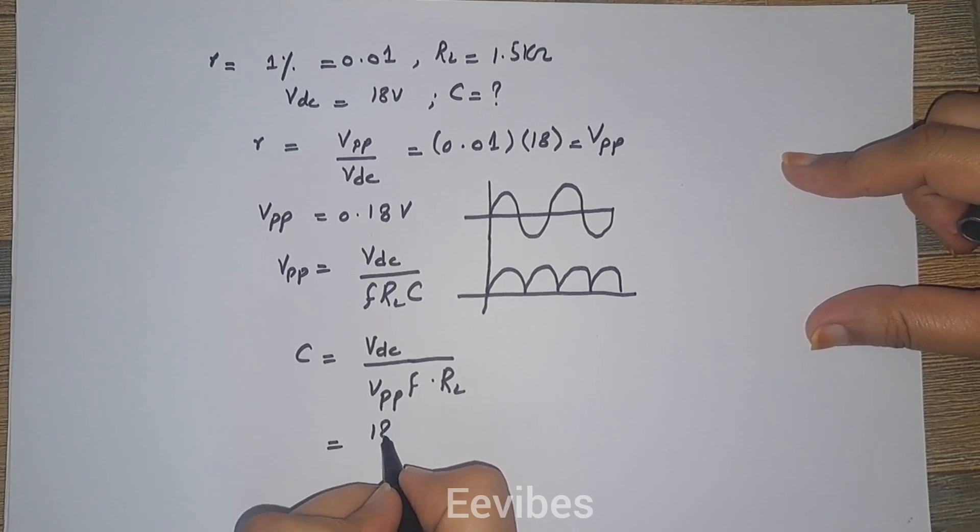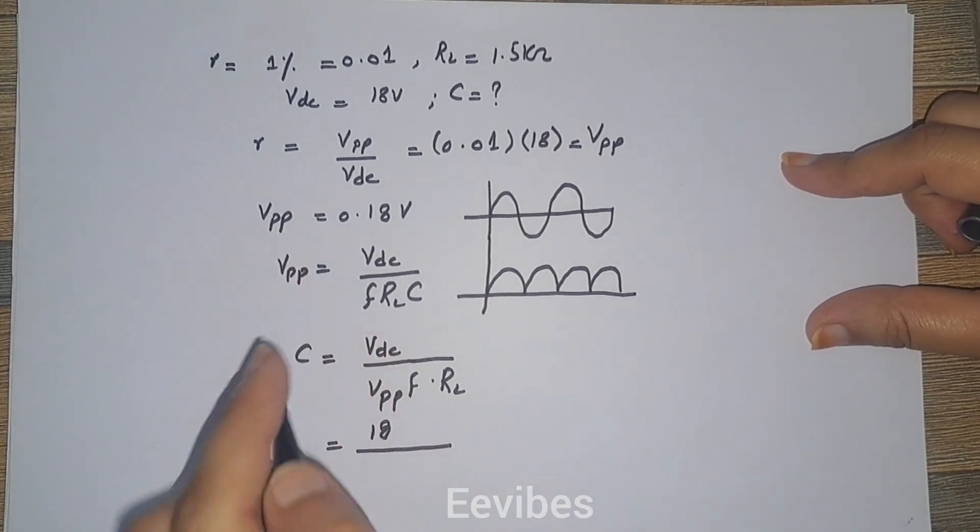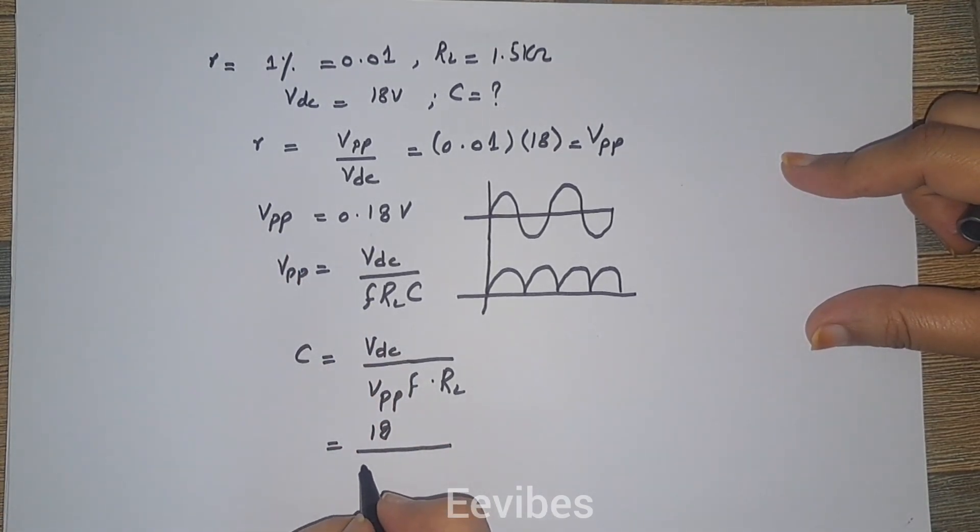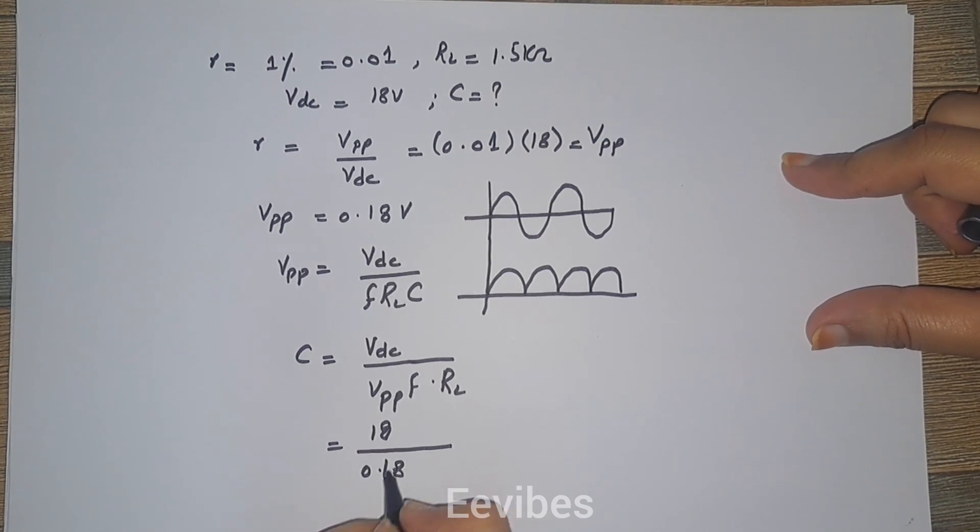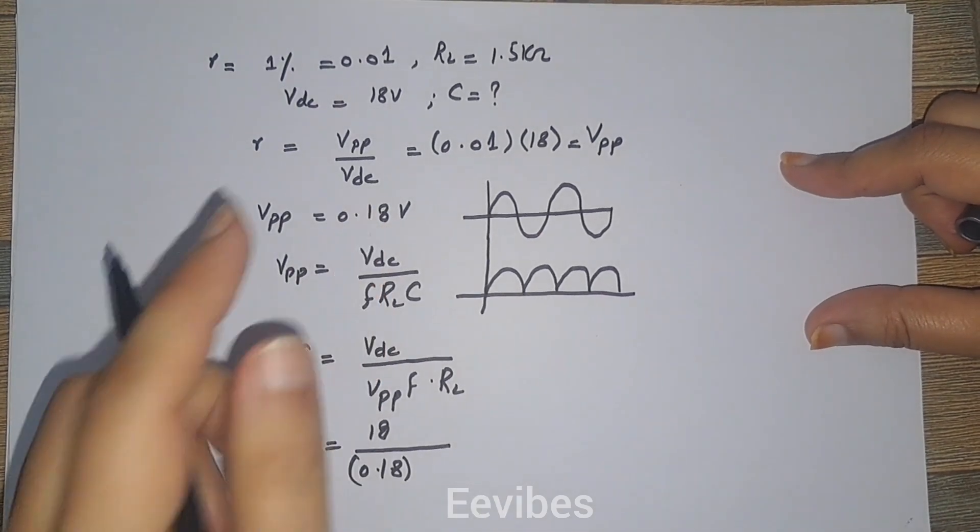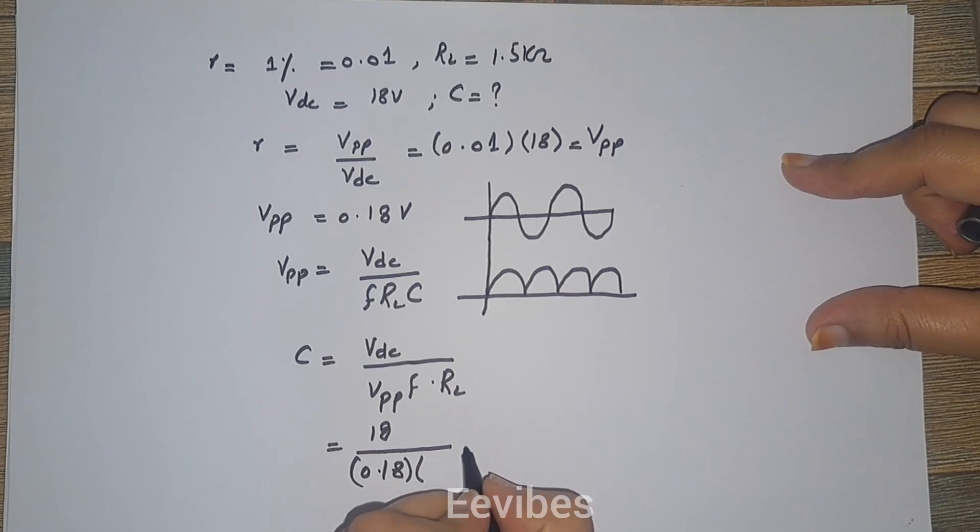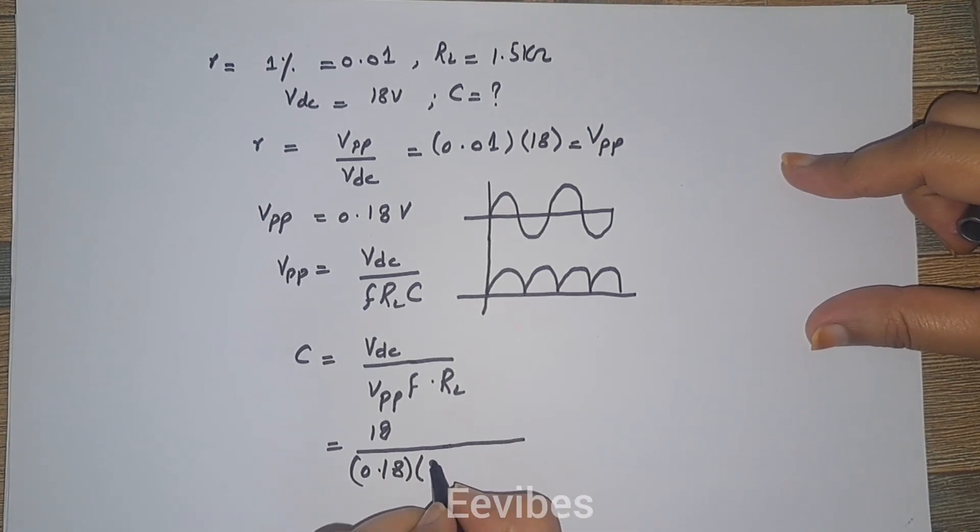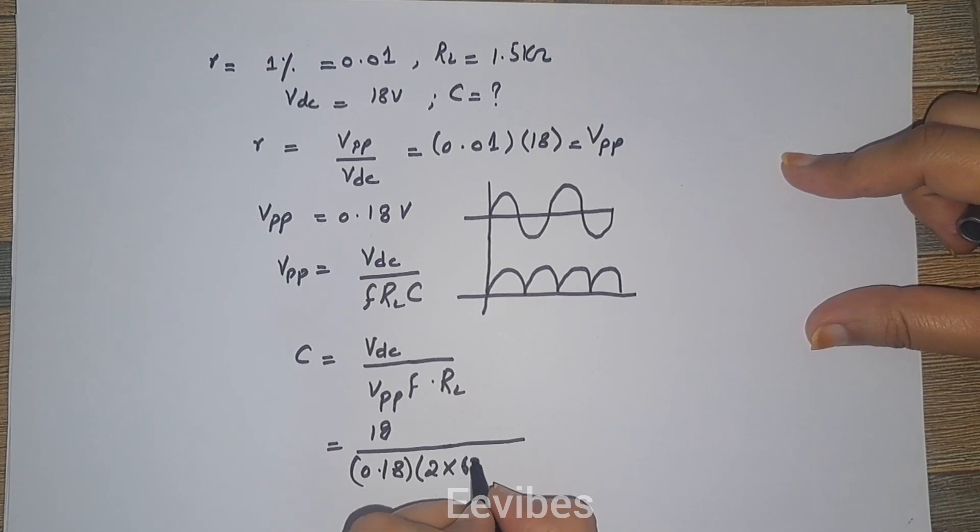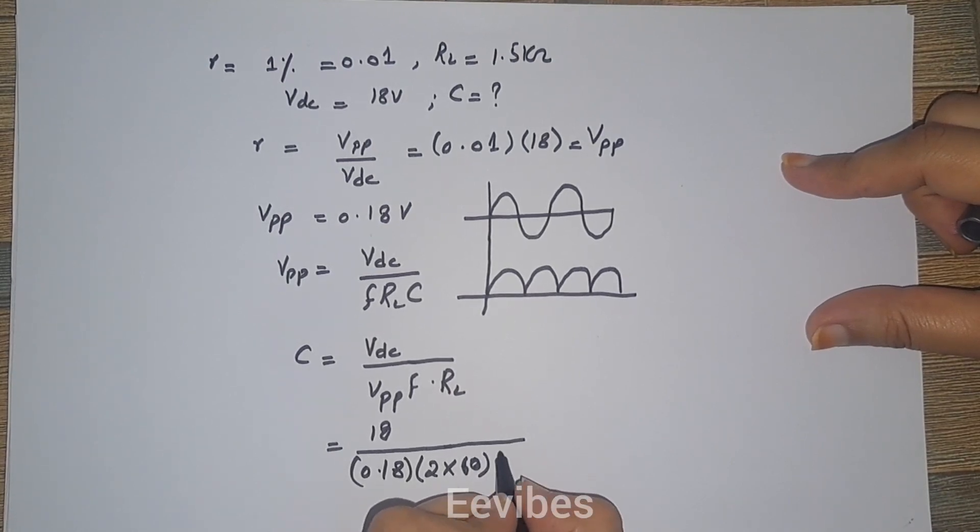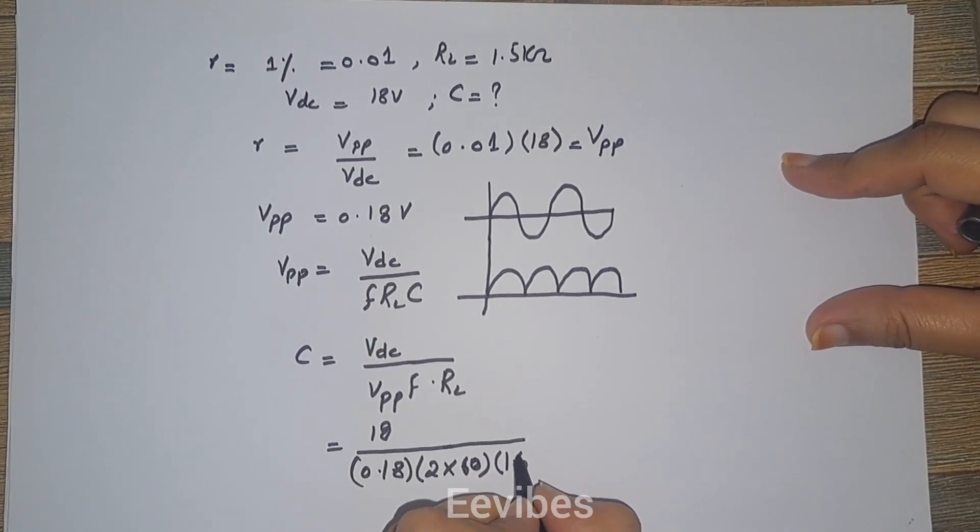So when you will substitute the values, you will see we will put VDC is equal to 18 volts, while V peak to peak is equal to 0.18 as we evaluated over here. And then the frequency, which is generally 60 volts, so you will multiply it by 2, and you are going to get 60 multiplied by 2 into the load resistor which is 1.5 kilo ohms in this case.